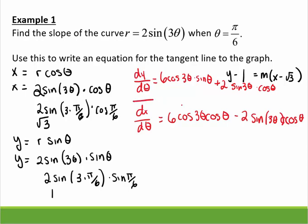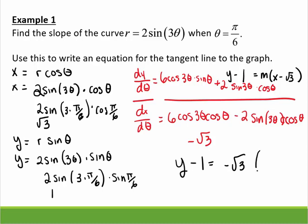Now when I plug in, so really it's that over that, that over that, so when I plug in π/3, I get, I'm sorry, π/6, I get negative root 3, and I'm not going through that step. I'm assuming that you guys can get that. So now it's a matter of y minus 1 equals negative root 3 times x minus root 3. So that's our equation of our tangent line.